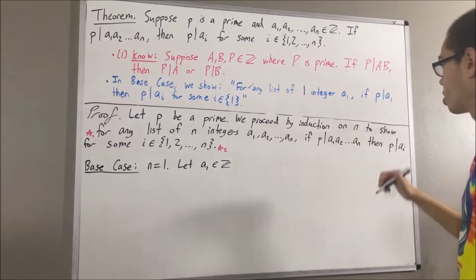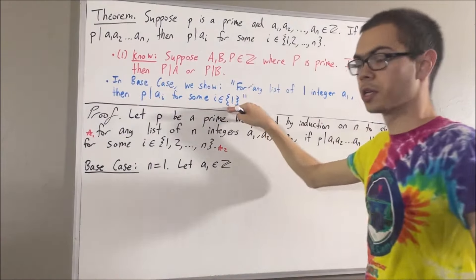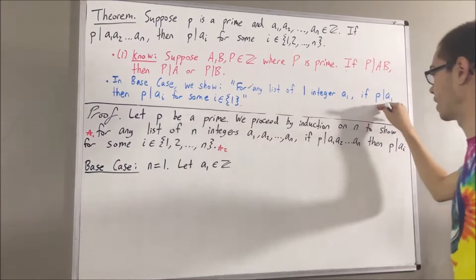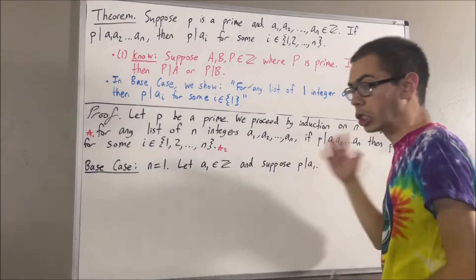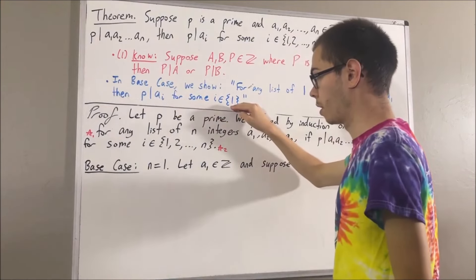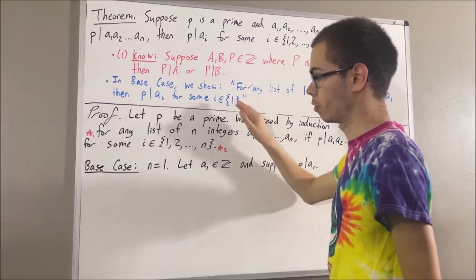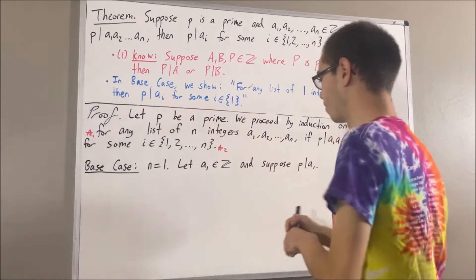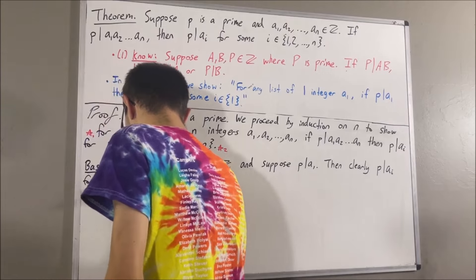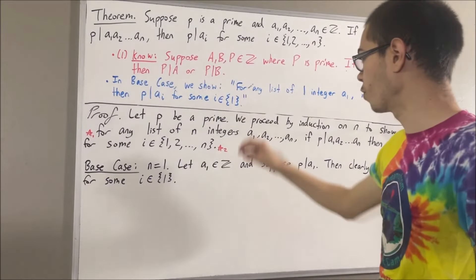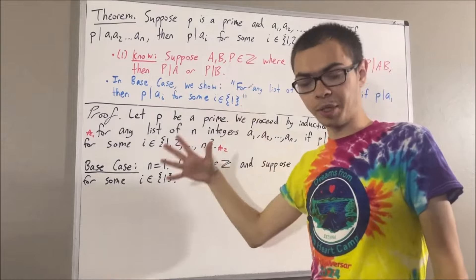From here, we want to show if this is true, then this is true. So let's suppose that p divides a1. Well then, clearly this is going to be true. Because if we take i to be 1, well yeah, p divides a1. So we have proven precisely what we wanted to prove. So this completes the base case.